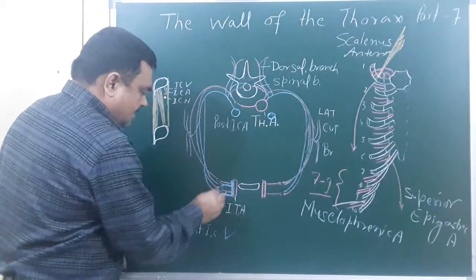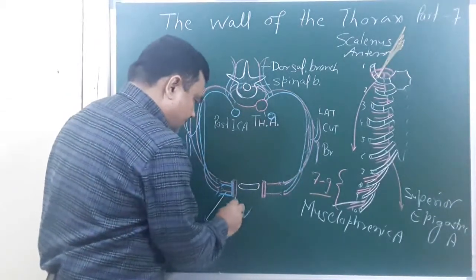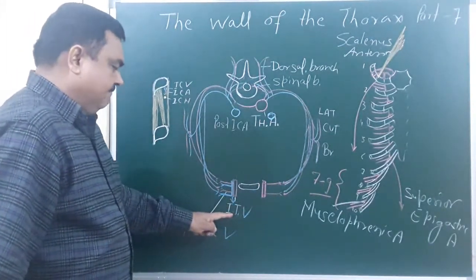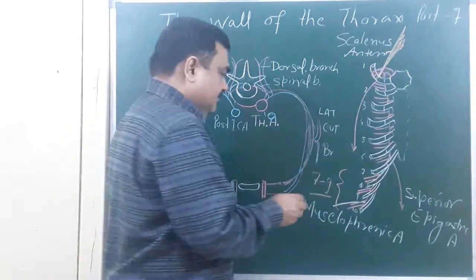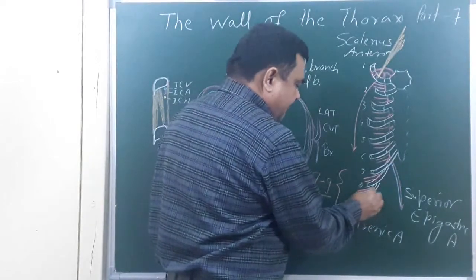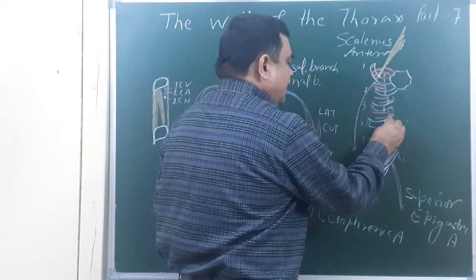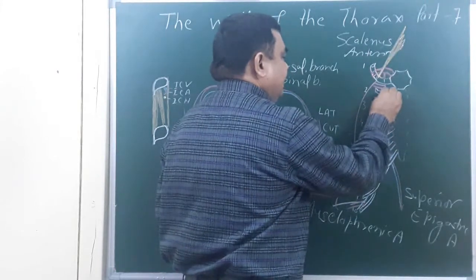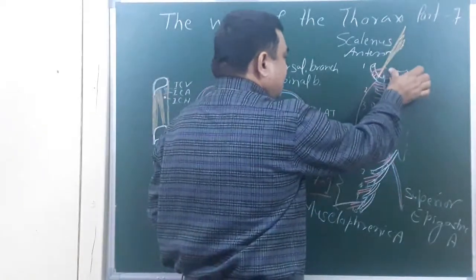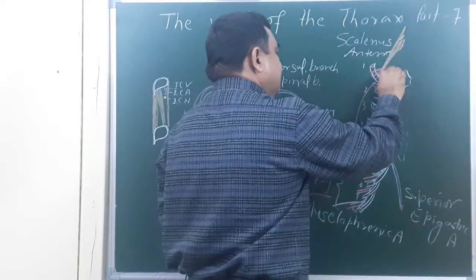The anterior intercostal vein drains into the internal thoracic vein. This internal thoracic vein — here you can see the superior epigastric vein and here is the musculophrenic vein — these join to form the internal thoracic vein. This internal thoracic vein then drains into the brachiocephalic vein.